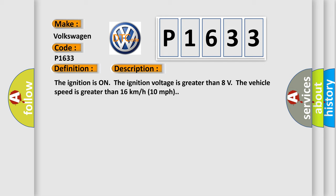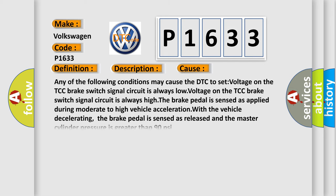This diagnostic error occurs most often in these cases. Any of the following conditions may cause the DTC to set: voltage on the TCC brake switch signal circuit is always low, voltage on the TCC brake switch signal circuit is always high, the brake pedal is sensed as applied during moderate to high vehicle acceleration. With the vehicle decelerating, the brake pedal is sensed as released and the master cylinder pressure is greater than 90 psi. The airbag reset website aims to provide information in 52 languages.